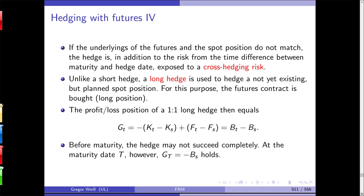The profit/loss position of a one-to-one long hedge equals minus (Kₜ − Kₛ) plus (Fₜ − Fₛ), which is Bₜ minus Bₛ — again the difference between the two bases. Before maturity it may not succeed, but at the maturity date we have the opposite profit position: the profit at capital T is minus Bₛ — minus the basis at the starting point.